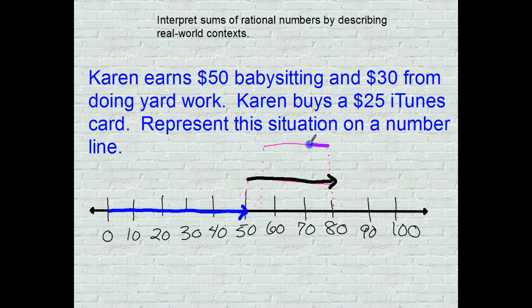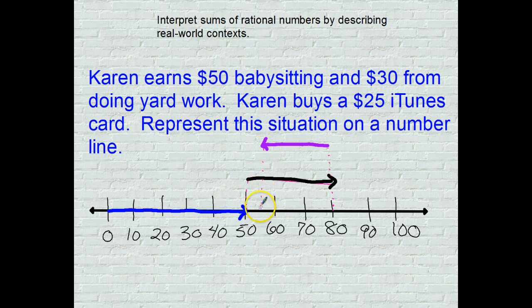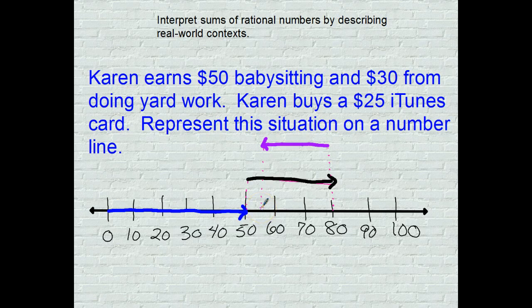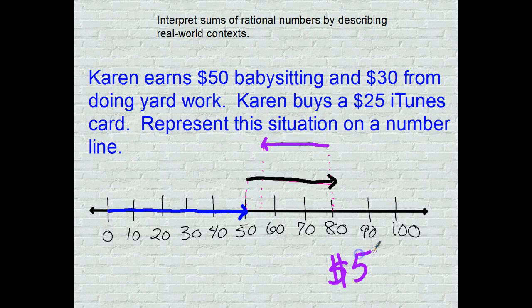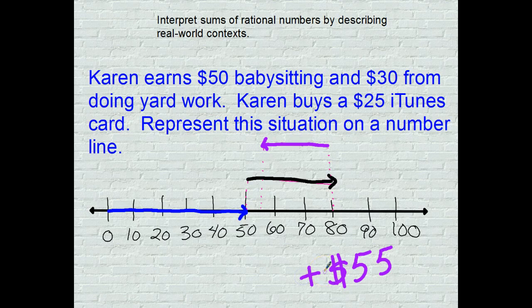Let's grab a different color here. We go back from this arrow and it comes right down here in between 50 and 60, which would be 55 dollars. So she is up $55. I don't think it asks for that, but she is plus $55 for all of her work and her purchase.